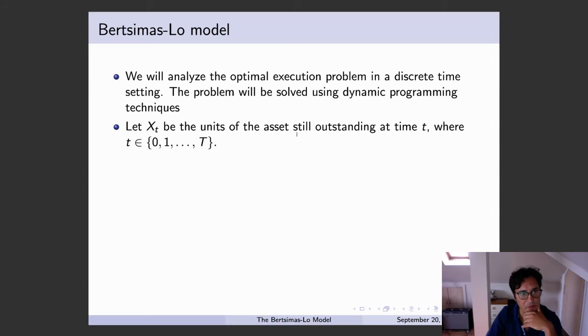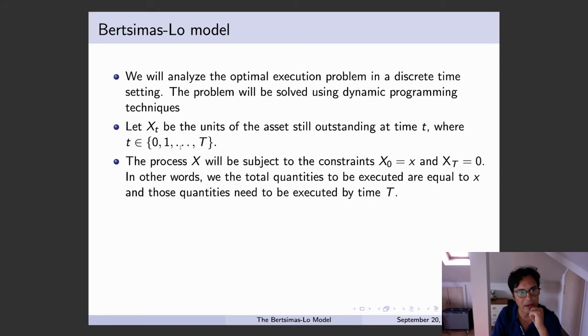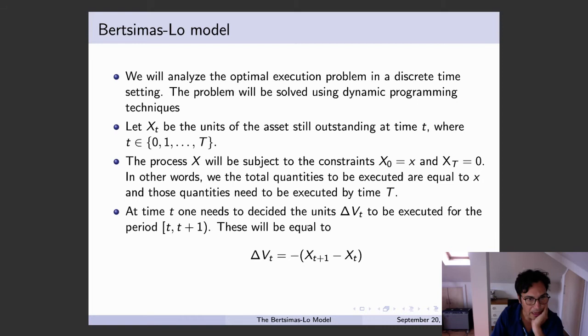So time X capital T, we have certain number of outstanding units. So imagine you start with X_0 equal 100, then X_1 is going to be 80, then X_2 is going to be 70. And the change in X_T is what we want to solve for, or equivalently we want to solve for what's the optimal amount outstanding we need to have at any point in time knowing that by the time we get to capital T, we need to be at zero. So these are the constraints I was mentioning before.